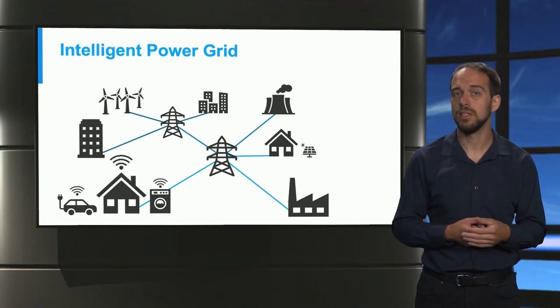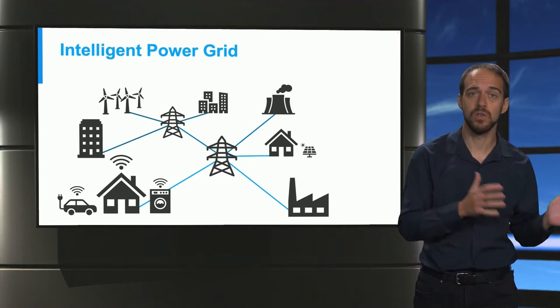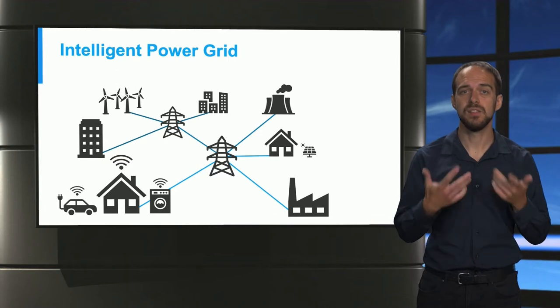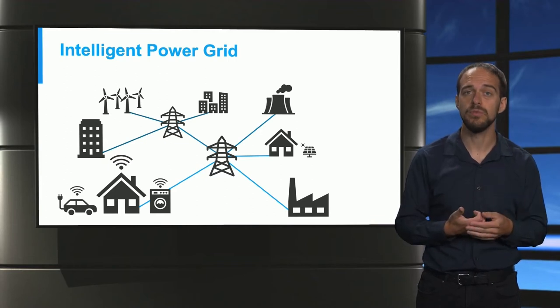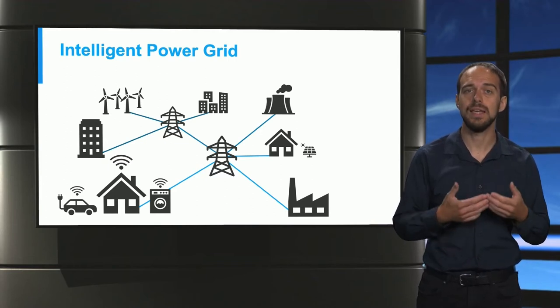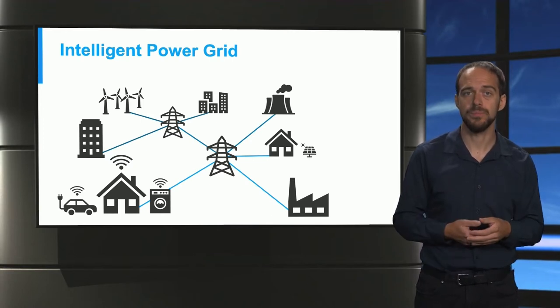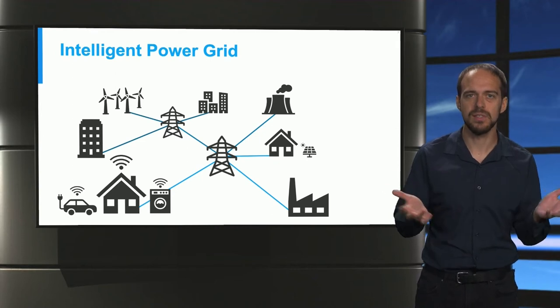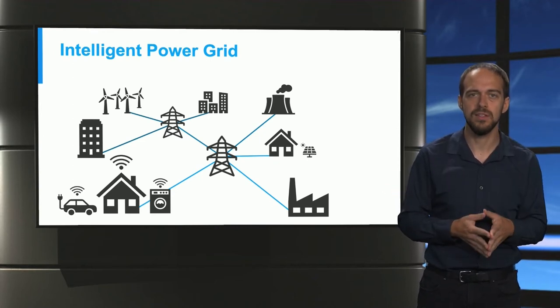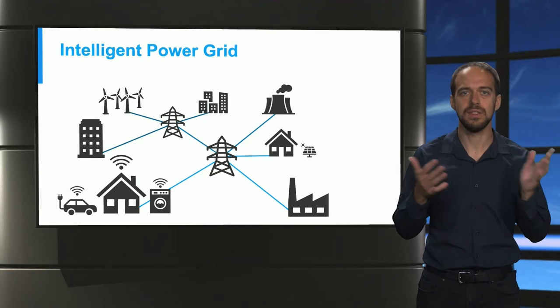Intelligence is not only being added to the residential side, but also in industry. This means that the improved control devices and communication also enables the industry to participate, for instance in demand response programs. So the entire system is now being expanded with flexibility on both the residential and industrial sides.